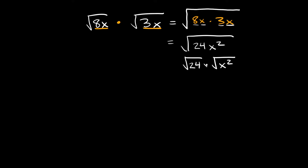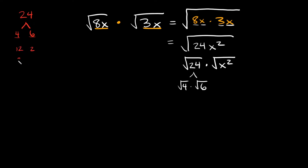Now here we have the square root of 24. Can we simplify this? We can! If you think of the number 24, how can I break that down into its factors? I could break it down into 4 times 6. I specifically chose this pair because there are other pairs — like 12 times 2, or 8 times 3 — but I chose 4 and 6 because 4 is a perfect square. So the square root of 24 breaks down into the square root of 4 times the square root of 6, and the square root of 4 is just 2. So we have 2 times the square root of 6.